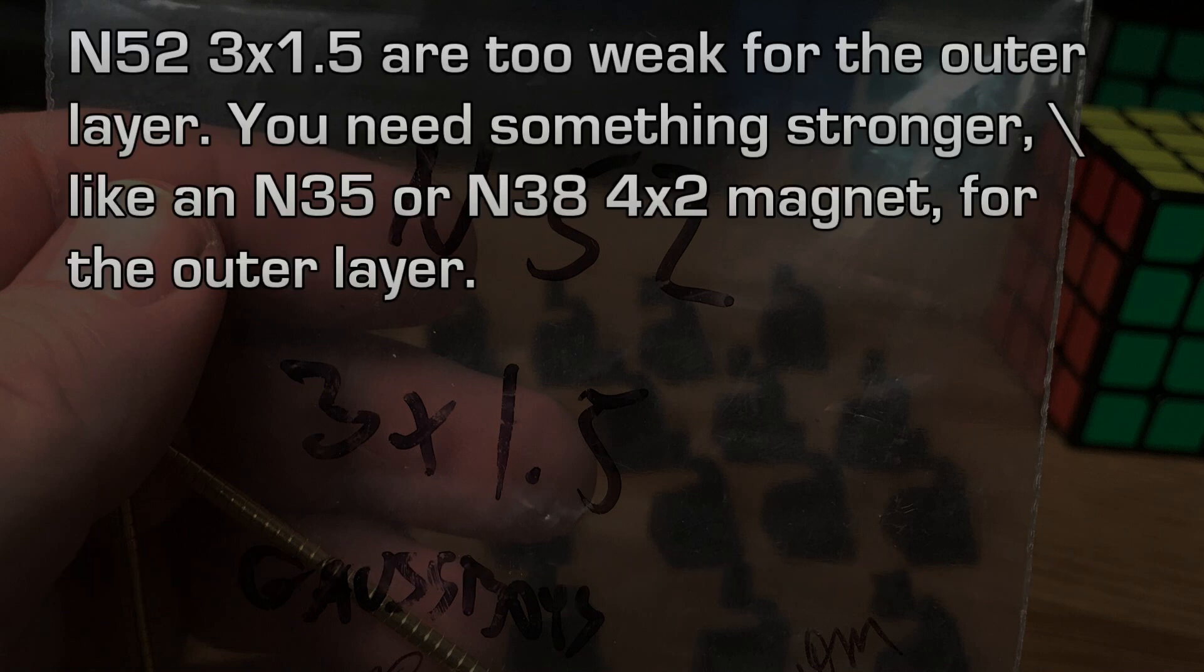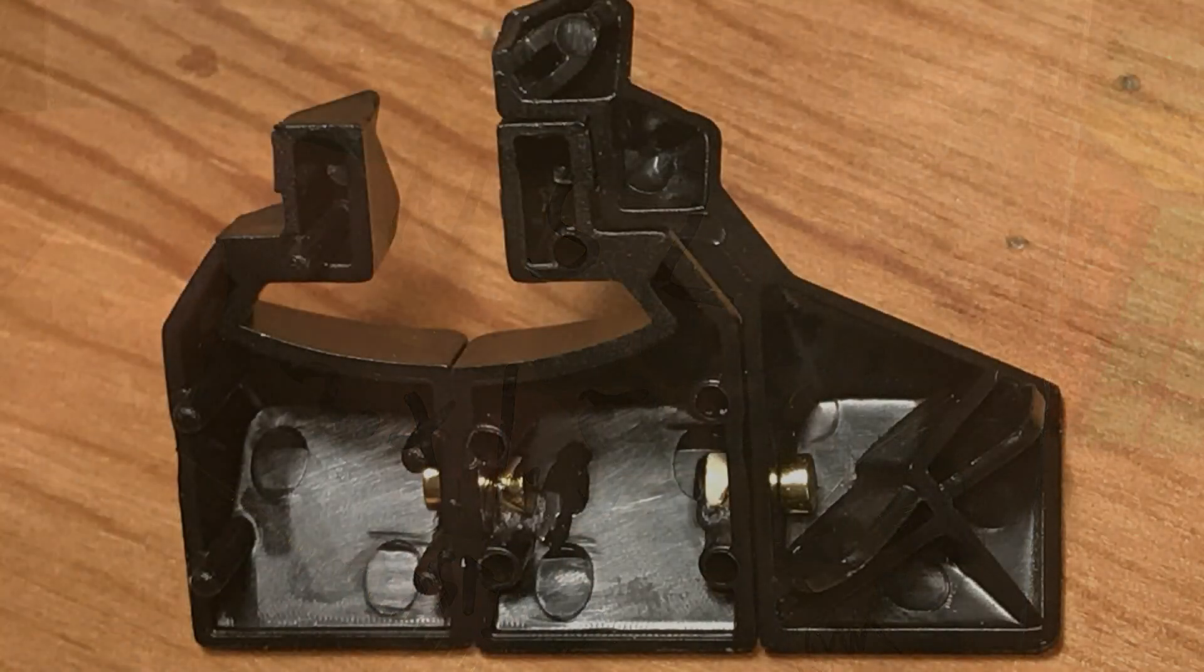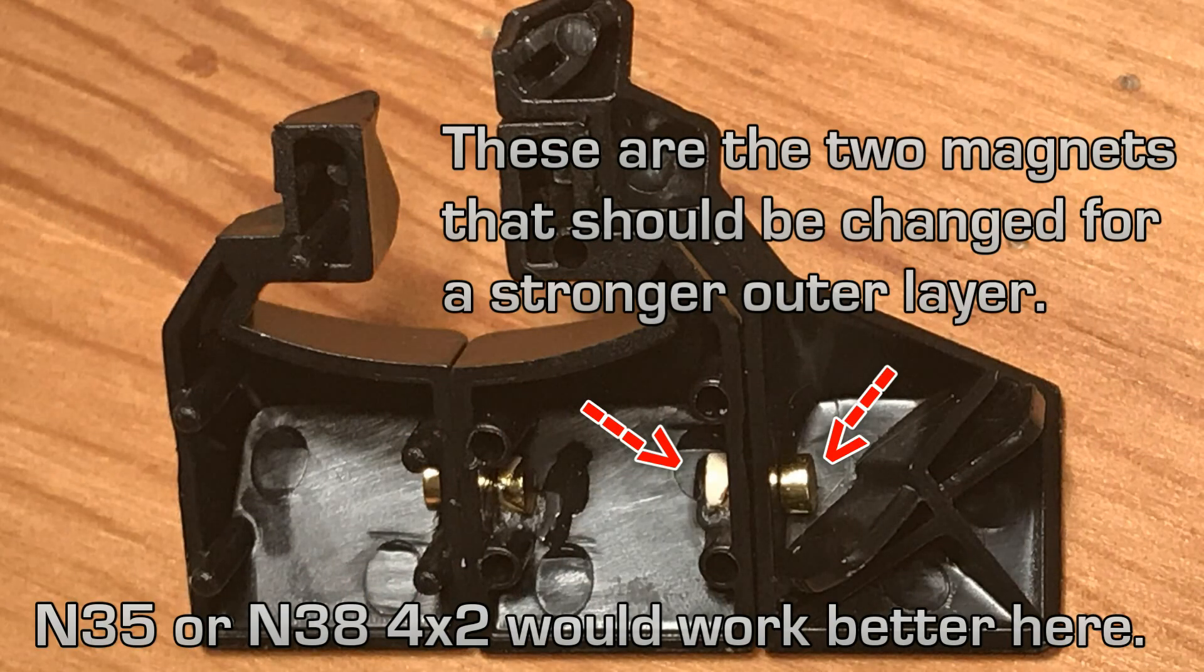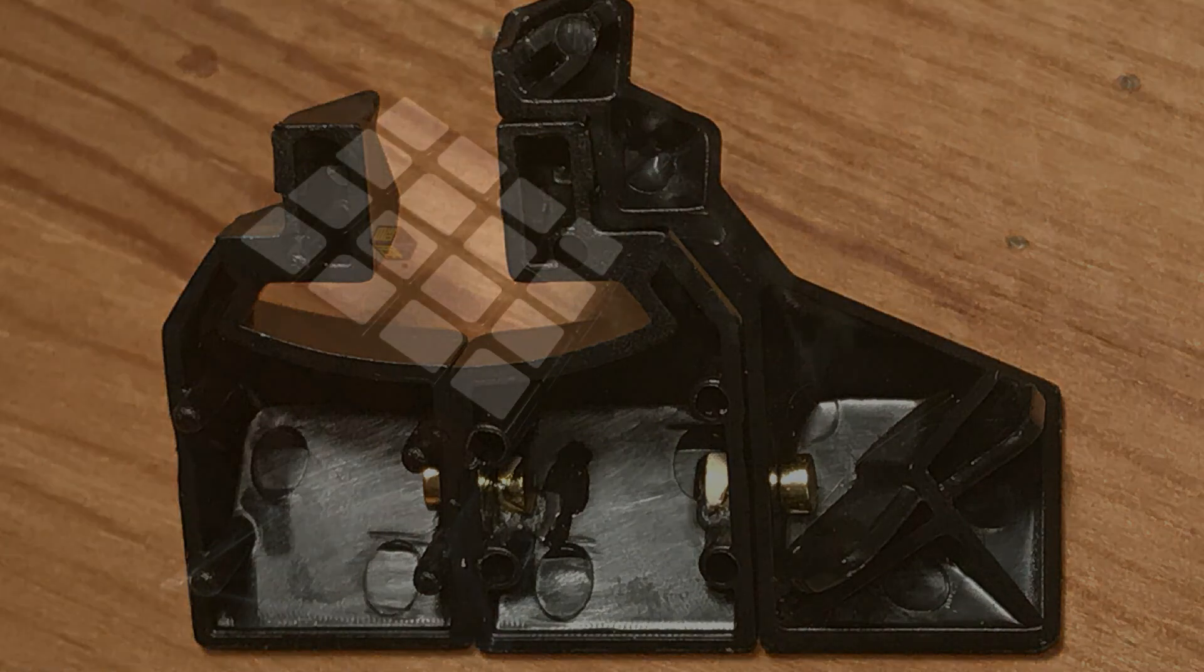Since this was a prototype, I used the same magnet throughout the cube. So the 3x1.5 on the outer layer is really too weak. You really don't feel any magnetic attraction at all. Some people are using an N35 4x2 magnet on the outer layer, and other people are using an N38 4x2. I'm just at my very early prototype stage of 4x4 cubes, so I'll probably experiment with an N38 4x2 on my next cube.